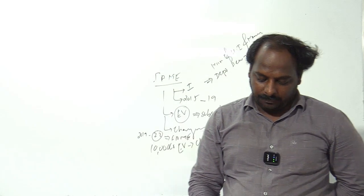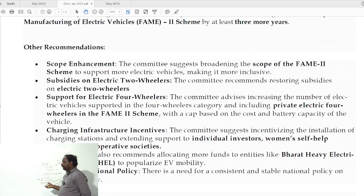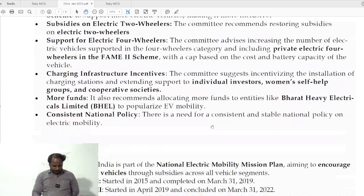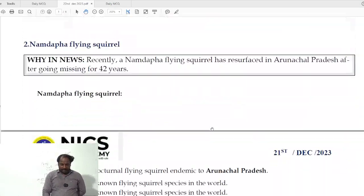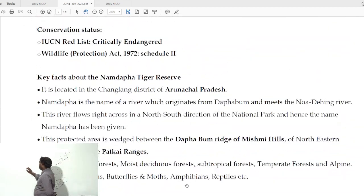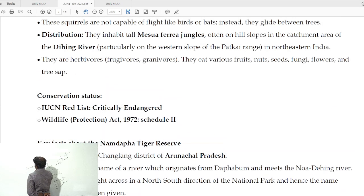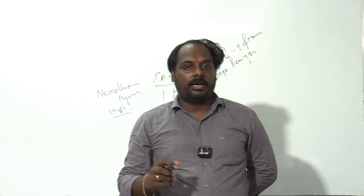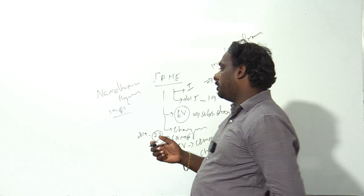That is why it came in news. That's all about this article. The next article is related to the Namdapha Flying Squirrel. In 1981, it was spotted in the Namdapha National Park, Tiger Reserve and National Park area in Arunachal Pradesh.